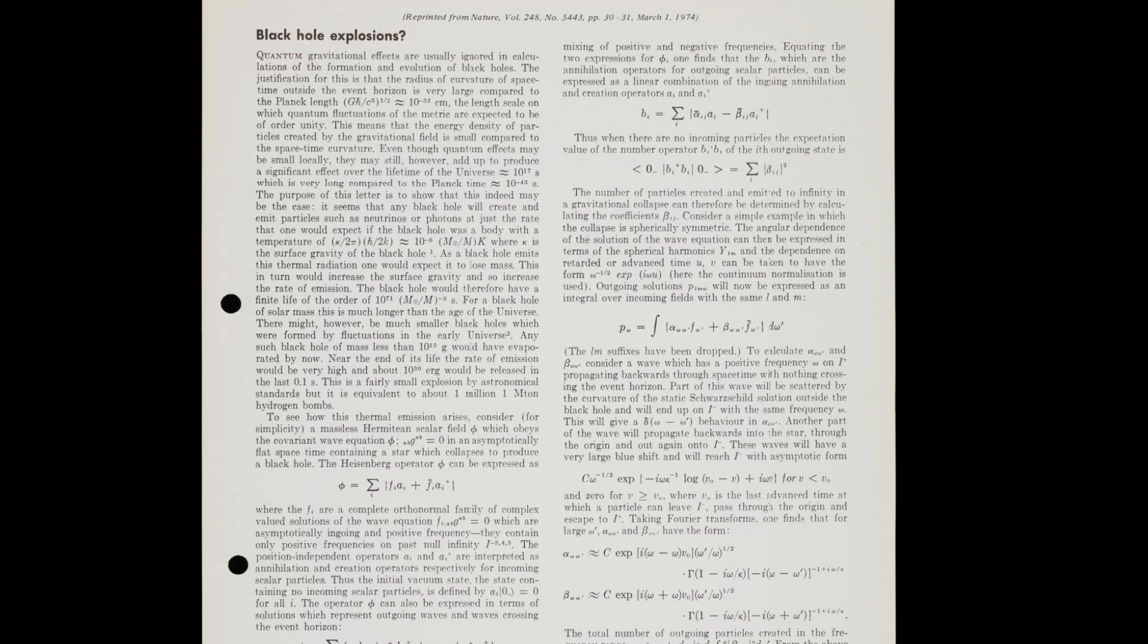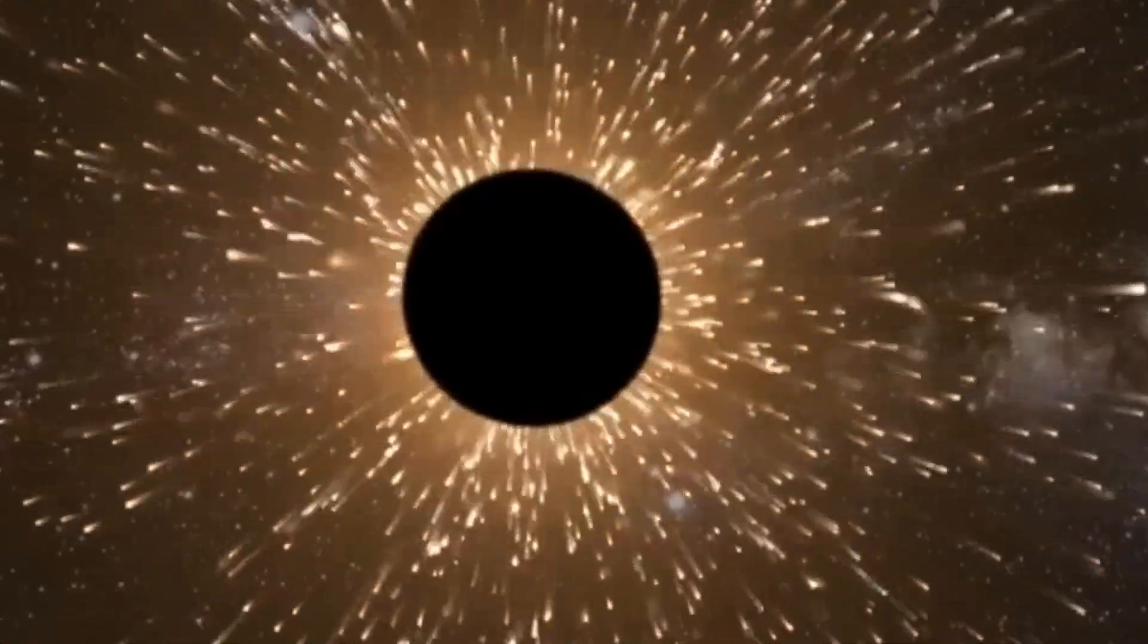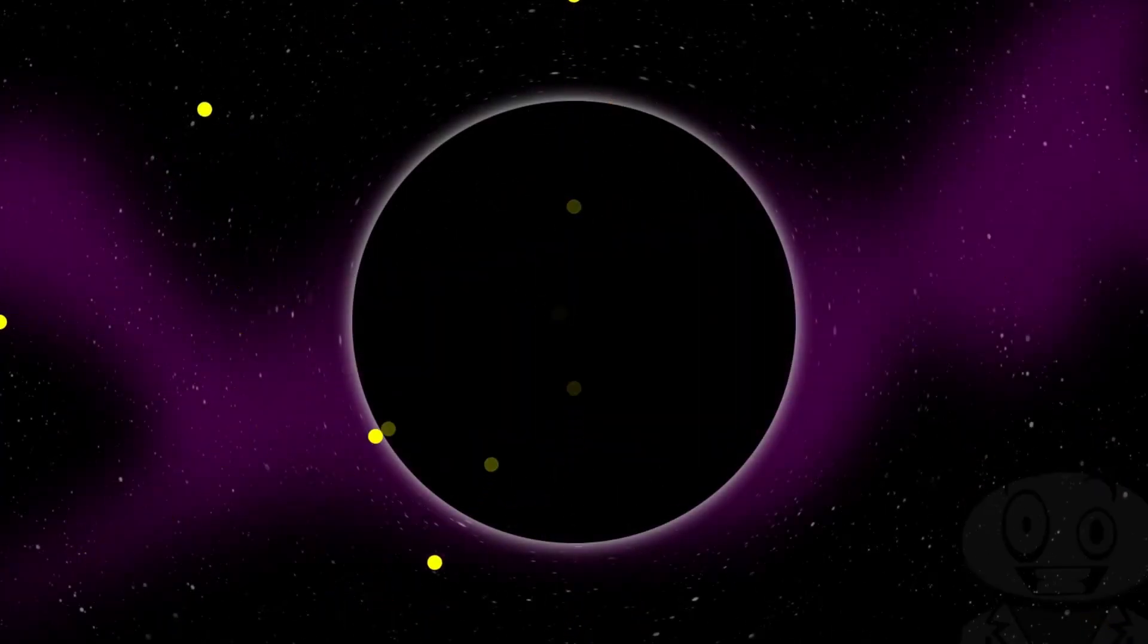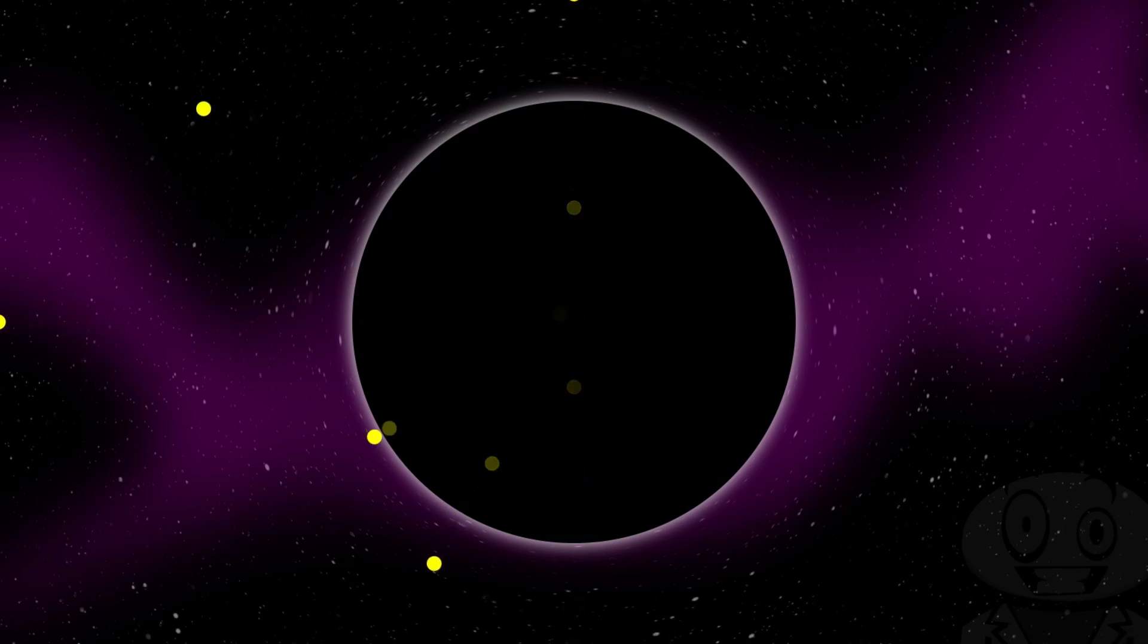They glow, they emit particles, and they have a temperature. This is called Hawking radiation. Picture it like this. Near the event horizon, pairs of particles are constantly popping in and out of existence, what scientists call entangled particles. One of these particles might fall into the black hole, while the other escapes into the universe. As the escaping particle carries energy away, the black hole loses energy and shrinks.